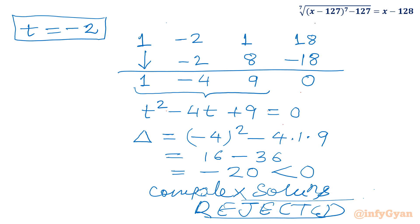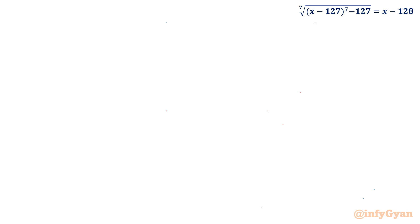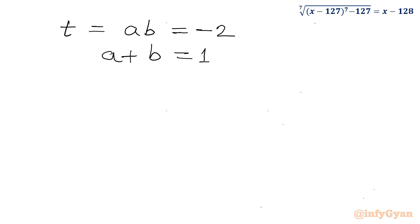So the only real solution we accept is t equal to minus 2. Since t was ab, we have ab equal to minus 2. Our first equation was a plus b equal to 1. Now I will frame a quadratic equation whose roots are a and b: a square minus (sum of roots) times a plus (product of roots) equals 0, giving a square minus a minus 2 equals 0.